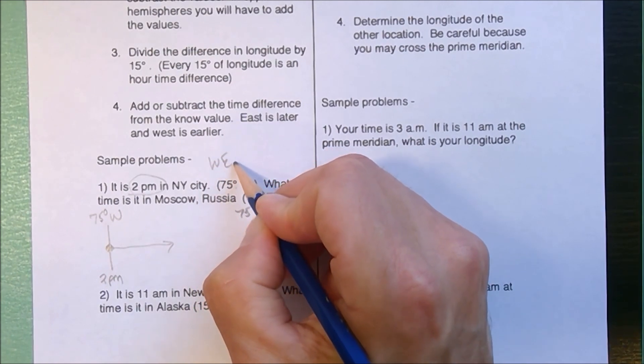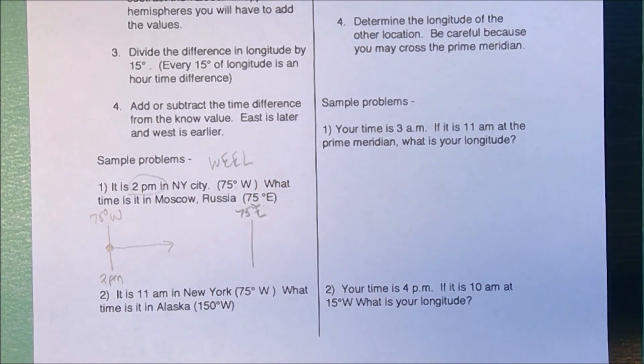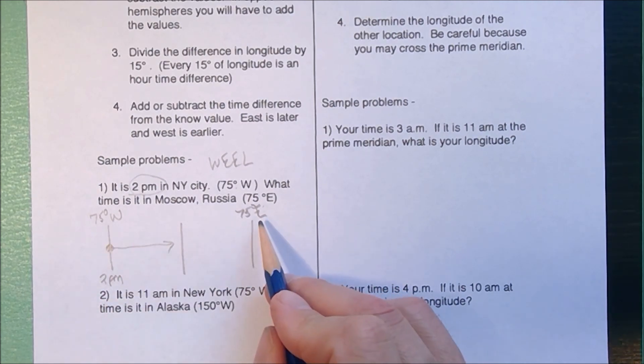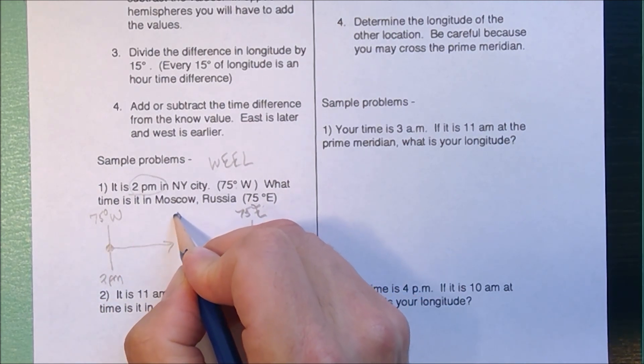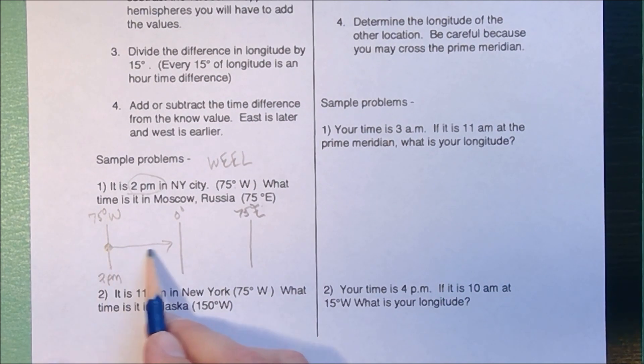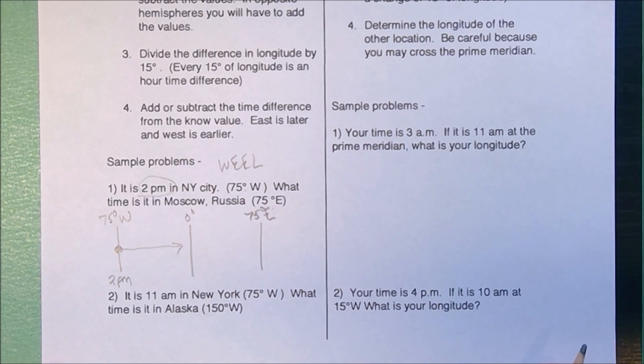For this problem, I always work with WEEL. I have to figure out: am I going west or east? In this case, I'm going east, so east is later in the day. Since I know two longitudes, I have to determine the difference in time. Between 75 degrees west and 75 degrees east, I'm going to hit the prime meridian. Since I have to cross the prime meridian, I'm going to add them.